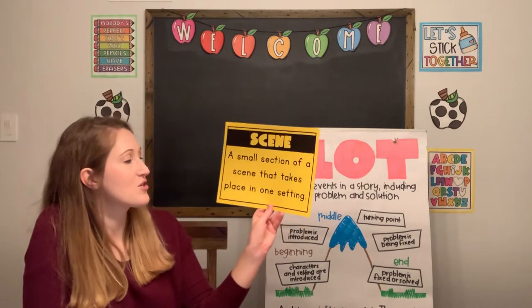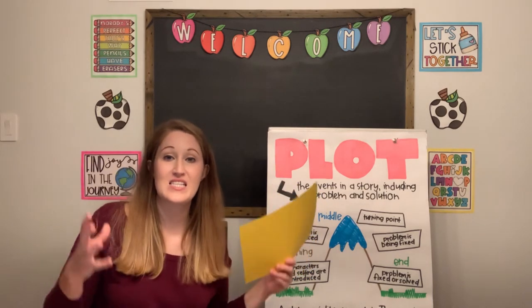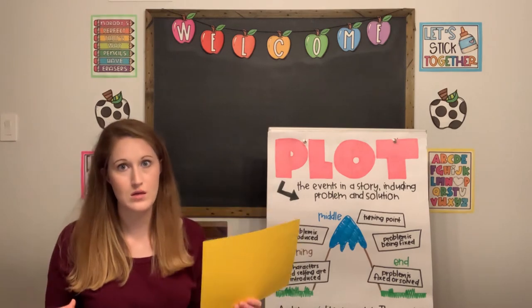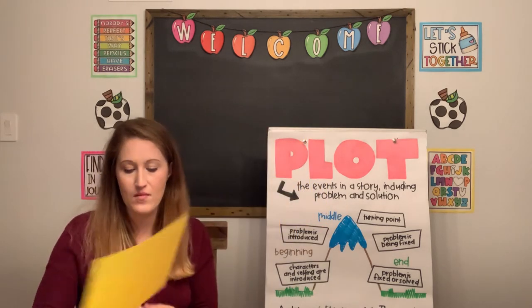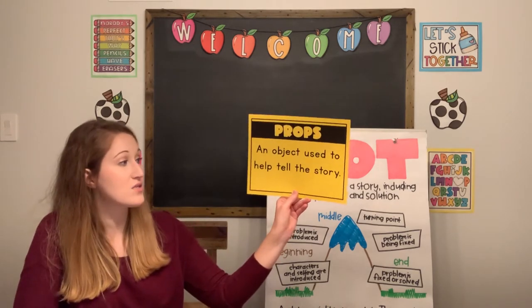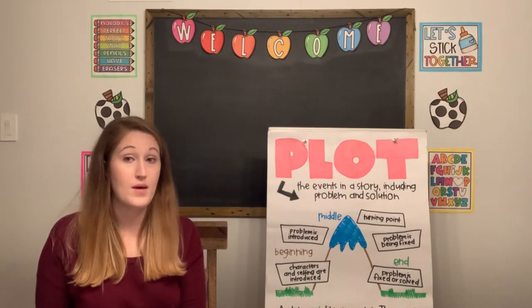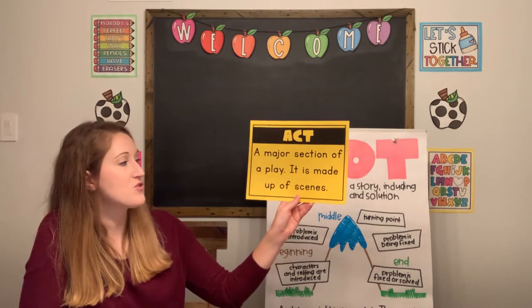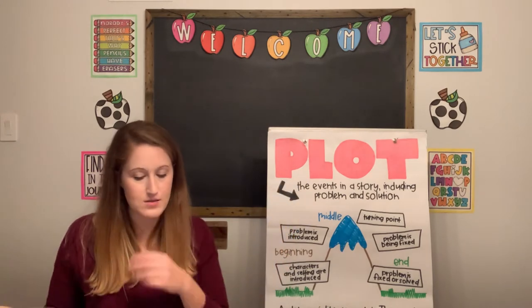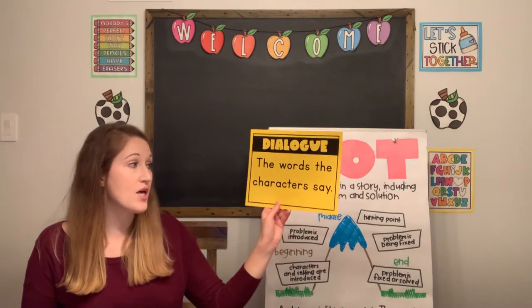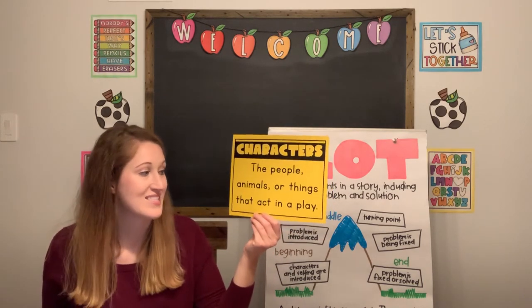Scenes are small sections of an act that take place in one setting — each scene is a setting, and when we switch somewhere new, that's a brand new scene. You have a script: the written words that tell the story. You have props: objects used to help tell the story. You have acts, which are major sections of a play made up of scenes. And you have dialogue: the words that the characters say. Last but not least, characters are the people, animals, or things that act in a play.